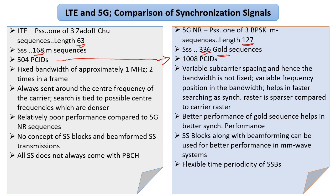In LTE, the approximate bandwidth of the region where synchronization signals are sent is around 1 MHz, roughly 4.6 RBs, sent two times in a frame — a very fixed periodicity. All that changes in 5G NR because of various deployment options. First, because of variable subcarrier spacing, the bandwidth is not fixed. It can also be positioned in a variety of ways, not necessarily at the center. This is primarily to help with faster sync through the sync raster concept. Fixed bandwidth and fixed position relative to center frequency are both quite different in 5G NR.